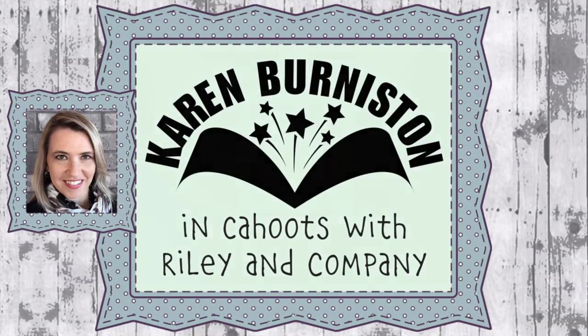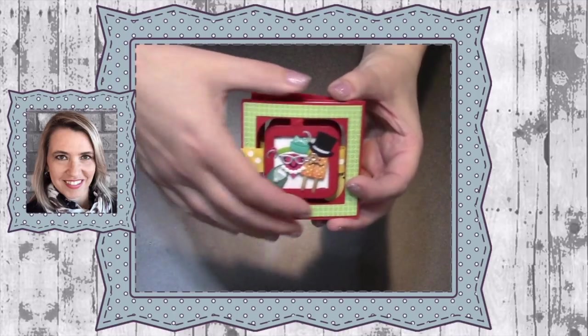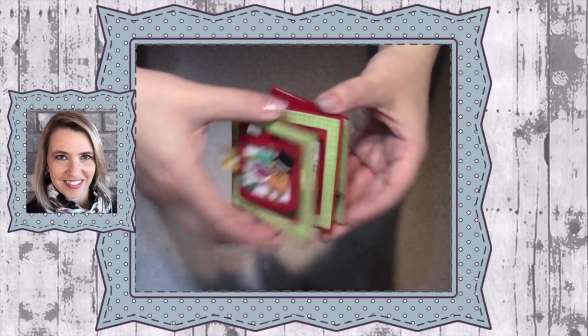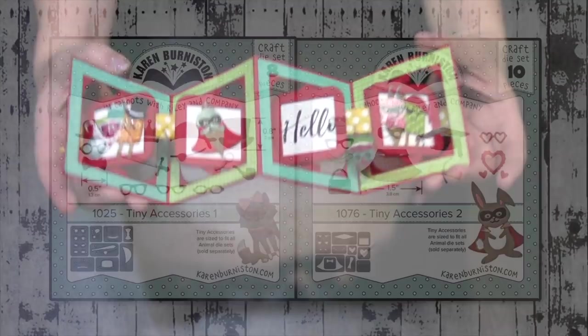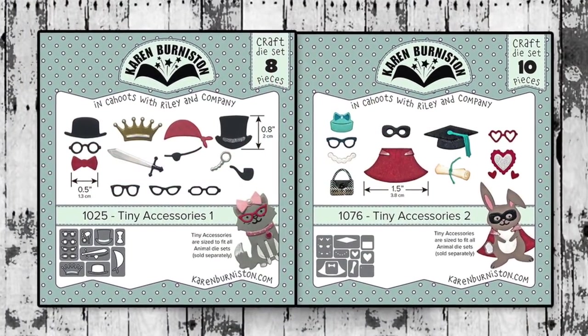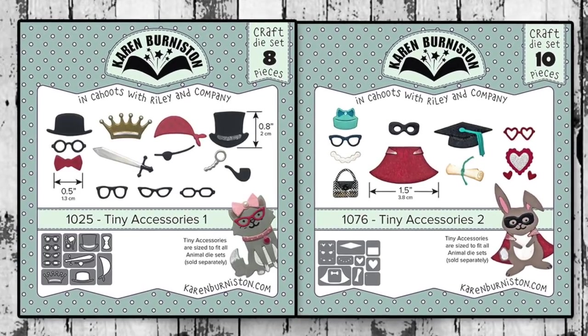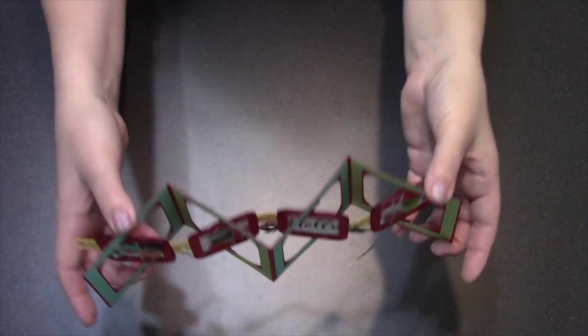Hello, it's Karen Burniston here with my monthly designer challenge video. The theme this month is tiny accessories. At the time of this video, there are two die sets that fit that bill: Tiny Accessories 1 and Tiny Accessories 2. Those little accessories are sized to fit on all of our animal dies.